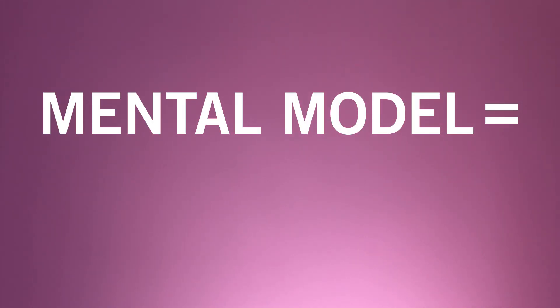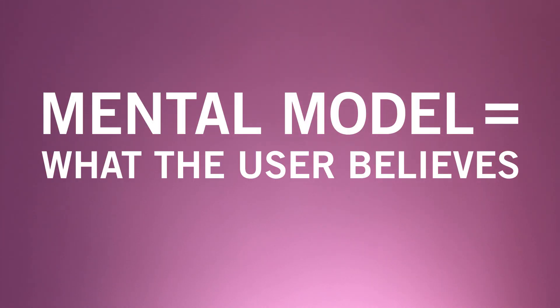This helps you understand your users' mental models and determine the best way to organize your site content. A mental model is based on what the user believes about a given system — in other words, how they expect a certain system to work. When it comes to websites and apps, the user's mental model will influence how they navigate and interact with the interface. So as a designer, it's important to design products that match the user's expectations. Card sorting is an excellent way to learn about how your user expects information to be categorized and structured.